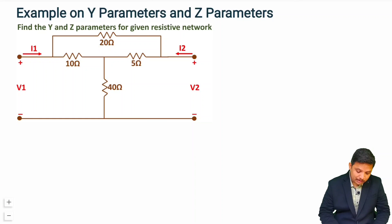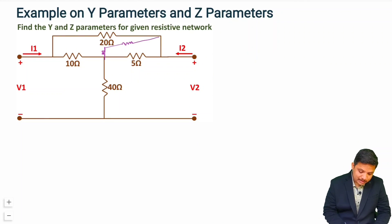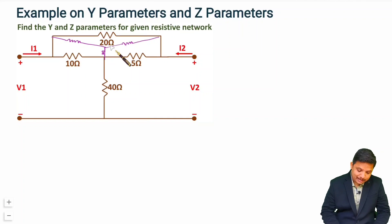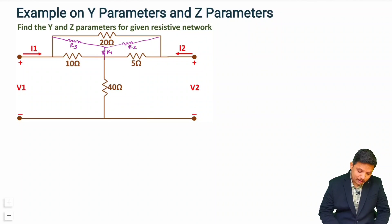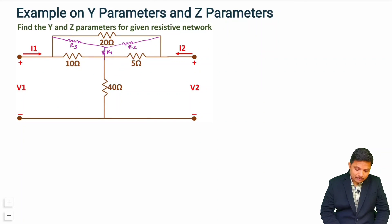Let me show you how the connections are arranged. There is one resistor here, one more resistor here, and one resistor here — that is how the star is formed inside this delta. Let us call them R1, R2, and R3 respectively.